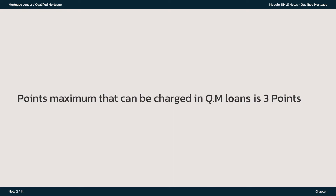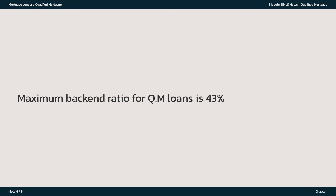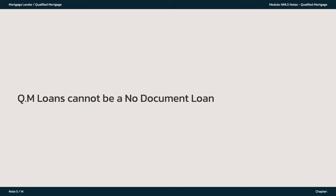Points maximum that can be charged in QM loans is 3 points. Maximum loan tenure on a QM loan is 30 years. Maximum back-end ratio for QM loans is 43%. QM loans cannot be a no-document loan.